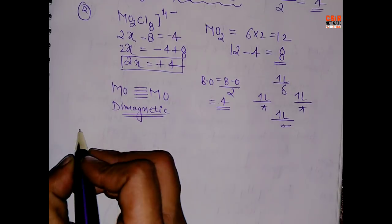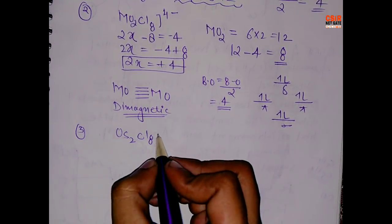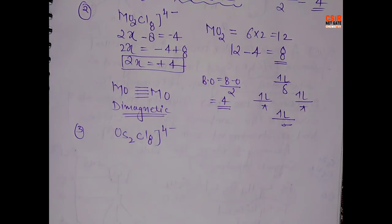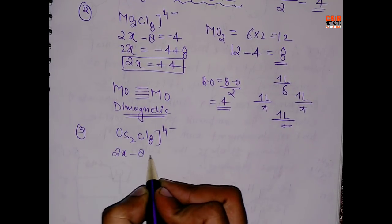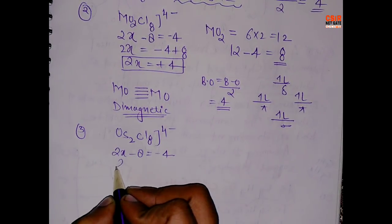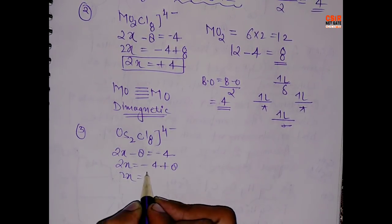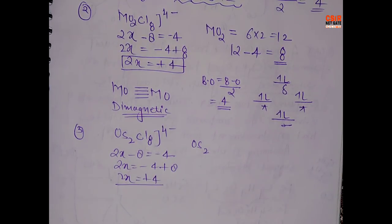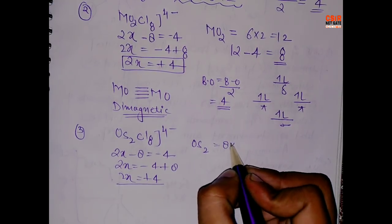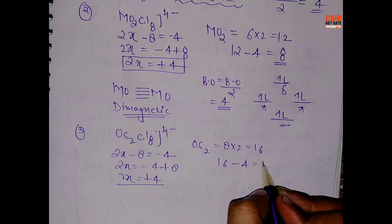Let's take another example: Os₂Cl₈⁴⁻. Let's see whether it has a delta bond or not. Again, 2x − 8 = −4, so 2x = +4. Osmium comes in the iron family, so it has 8 valence electrons: 8 × 2 = 16. Then 16 − 4 = 12 electrons.